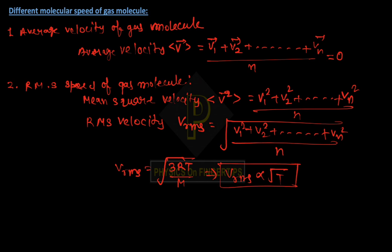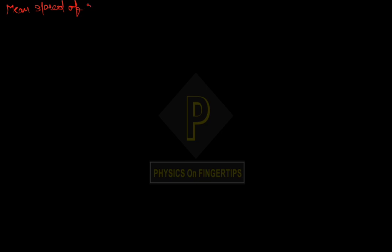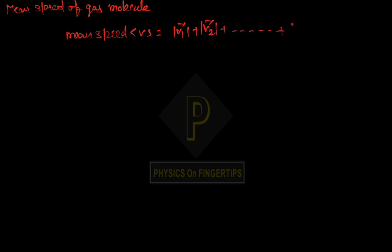Next, let's discuss the Mean Speed of a gas molecule. Mean Speed is the average of the magnitudes of velocities: |V1| plus |V2| up to |Vn| upon n. When this is solved, the formula for Mean Speed comes out directly as under root of 8RT by pi m.